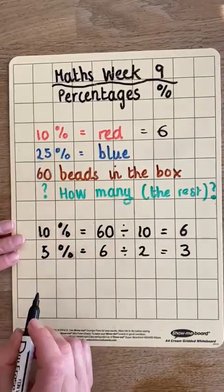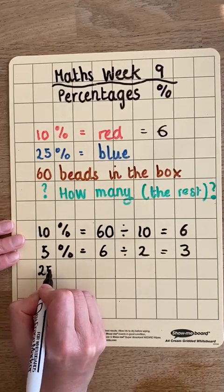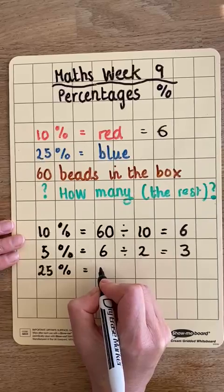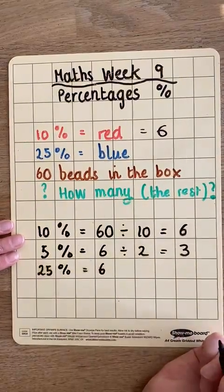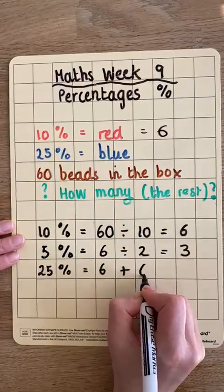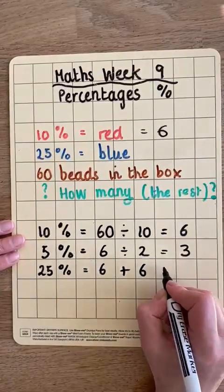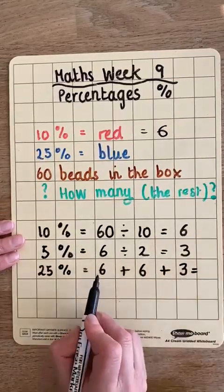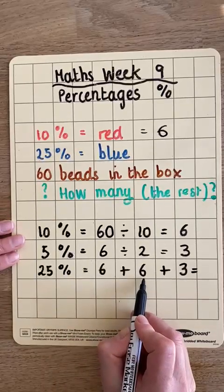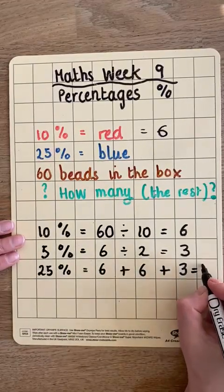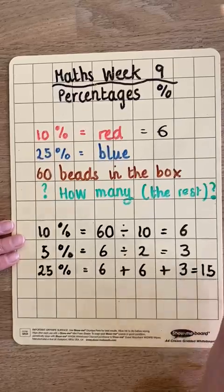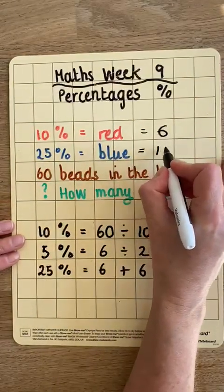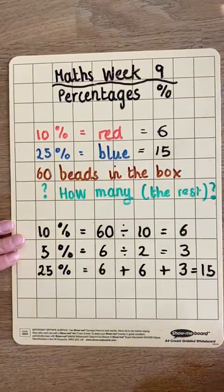So to find our 25%, we do 10% (which is 6), add 10% (another 6), add 5% (which is 3). So 6 add 6 is 12, add 3 is 15. So now we know that the value of our blue beads is 15. We have 15 blue beads.